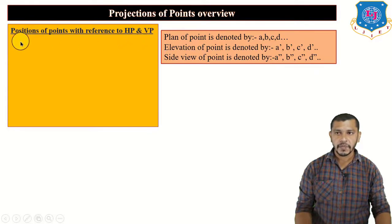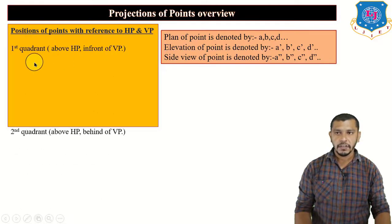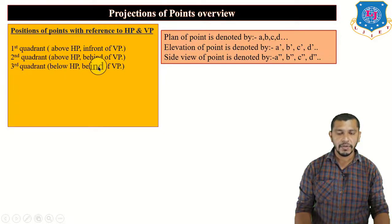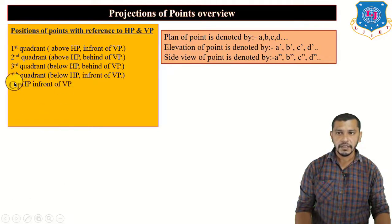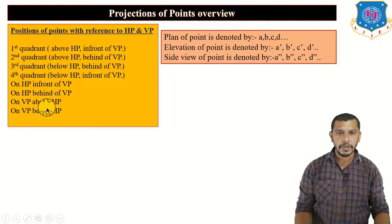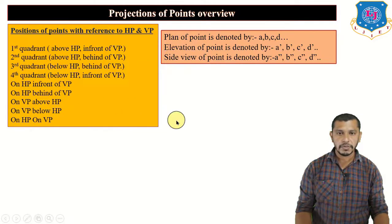With reference to HP and VP: if the point is in the first quadrant, it is above HP and in front of VP. Second quadrant means above HP and behind VP. Third quadrant means below HP and behind VP. Fourth quadrant means below HP and in front of VP. Additional positions include: on HP in front of VP, on HP behind VP, on VP above HP, on VP below HP, and lastly on both HP and VP.